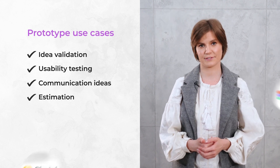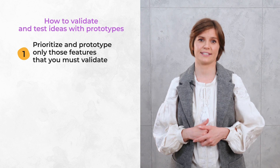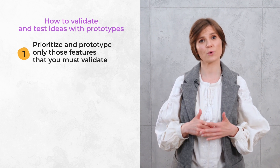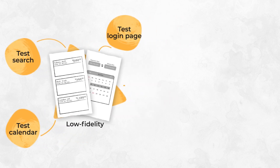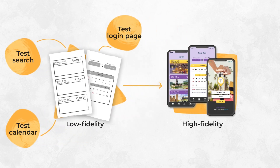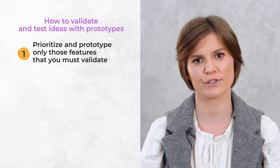They can be coded to mimic actual behavior, or you can use Figma, Sketch, InVision, or other prototyping tools. Now, some recommendations on how to employ a prototype as you validate ideas and test usability. Prioritize and prototype only those features you must validate. High fidelity prototypes take a lot more effort, so start with low fidelity ones, decide exactly what you want to test, then prioritize features that will make it to a higher fidelity version. This helps you iterate faster and your designers won't feel discouraged by having to make lots of changes.